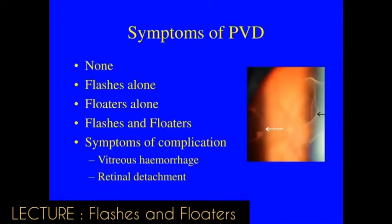In most patients, PVD is completely asymptomatic. In some, the separation of the jelly causes flashes alone; in others, just a floater; and in others, both flashes and floaters. About one in 20 patients — 5% — develop a complication: the adhesion between the vitreous and retina is so strong that as the vitreous separates, it tears the retina, leading to vitreous hemorrhage and potentially a retinal tear that, if not treated early, can lead to retinal detachment with consequent loss of vision.